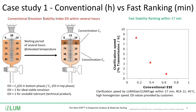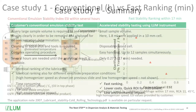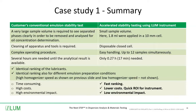Here we have the plot of the analytical result obtained by LUM — the clarification speed, the change of transmission with time versus the customer's value for the conventional ESI. We can see one lubricant is the most stable, one is in the medium range, and one is unstable. This is the identical ranking obtained after 17 minutes, 11 times accelerated and copied at the same temperature of 45°C, giving identical ranking of the lubricants also under different emulsion preparation conditions.